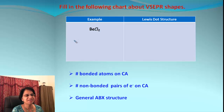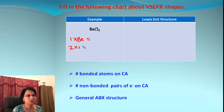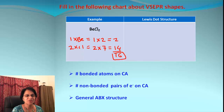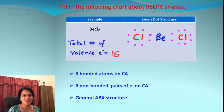First we need to find the number of valence electrons. We have one beryllium and two chlorine atoms. Beryllium is in group number 2, giving 2 electrons. Chlorine is in group number 7 — we have two chlorines, each contributing 7 electrons, giving 14 electrons. That gives 16 valence electrons total for beryllium chloride.